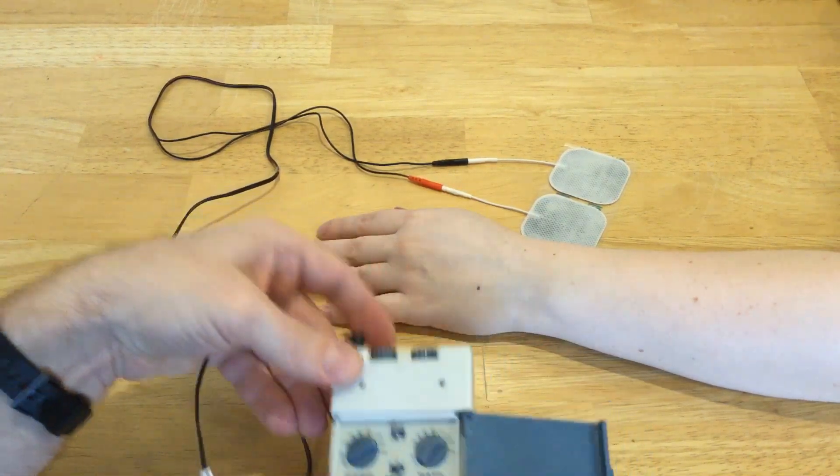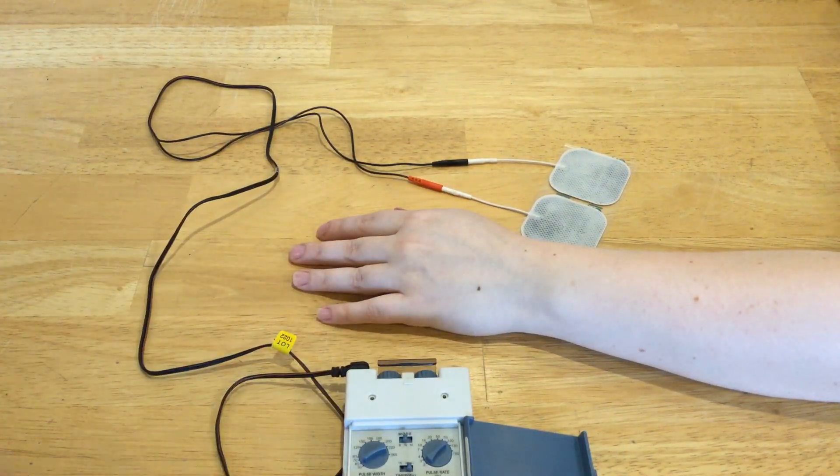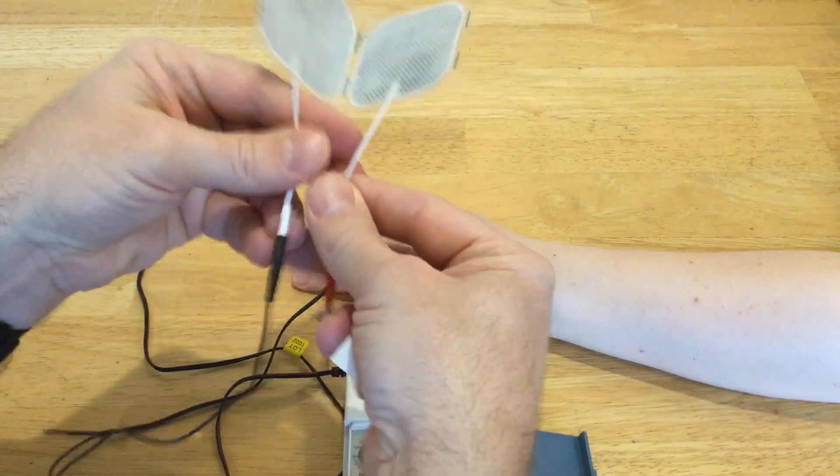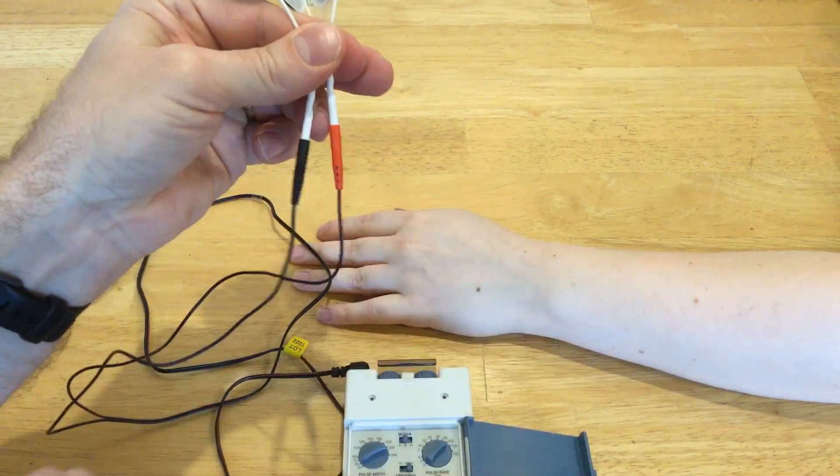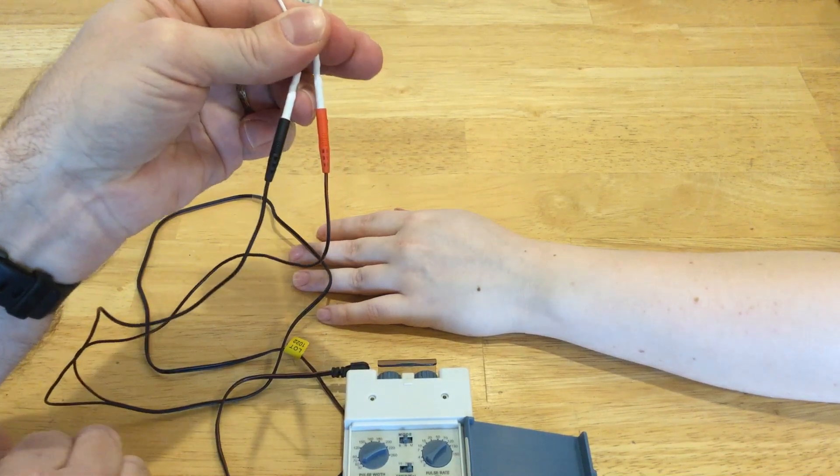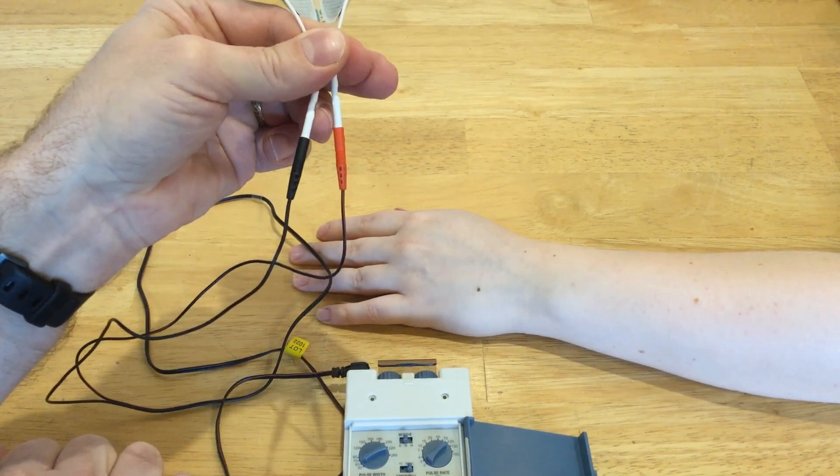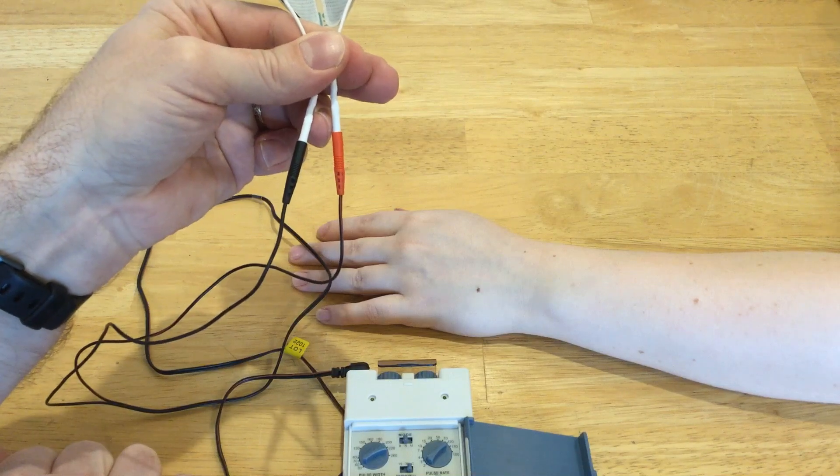So we're just going to try this a minute here. You'll also notice that with this machine, you have one red lead wire and one black lead wire. That would lead you to believe that they do different things, but they do not.